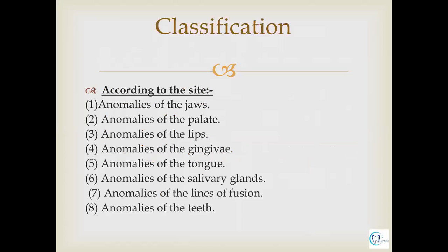Starting with the classification of developmental anomalies according to site, they can be anomalies of the jaw, anomalies of the palate, anomalies of the lips, anomaly of the gingiva, tongue, salivary gland, lines of fusion, and teeth. Today we will be discussing only the developmental anomalies of teeth.